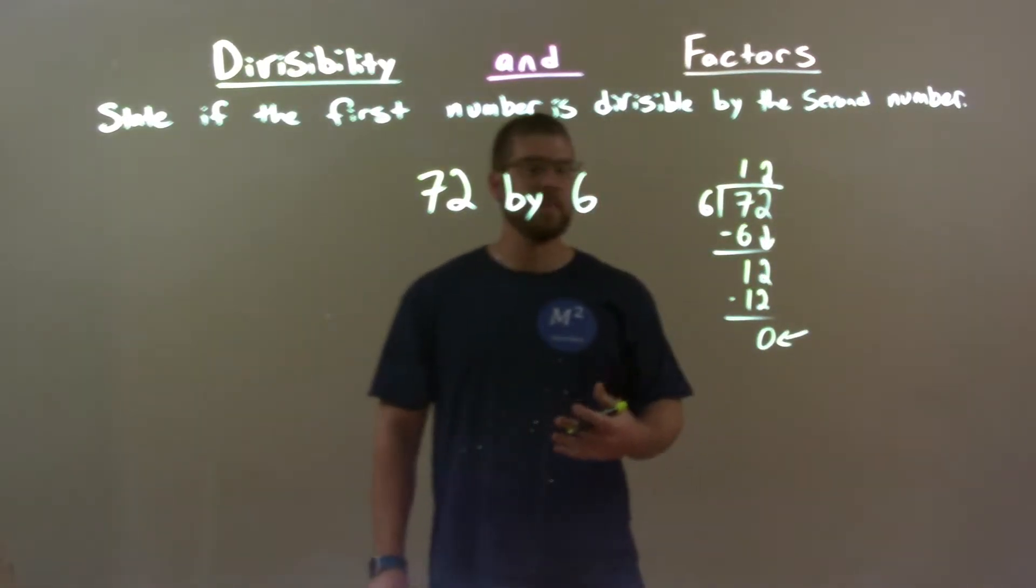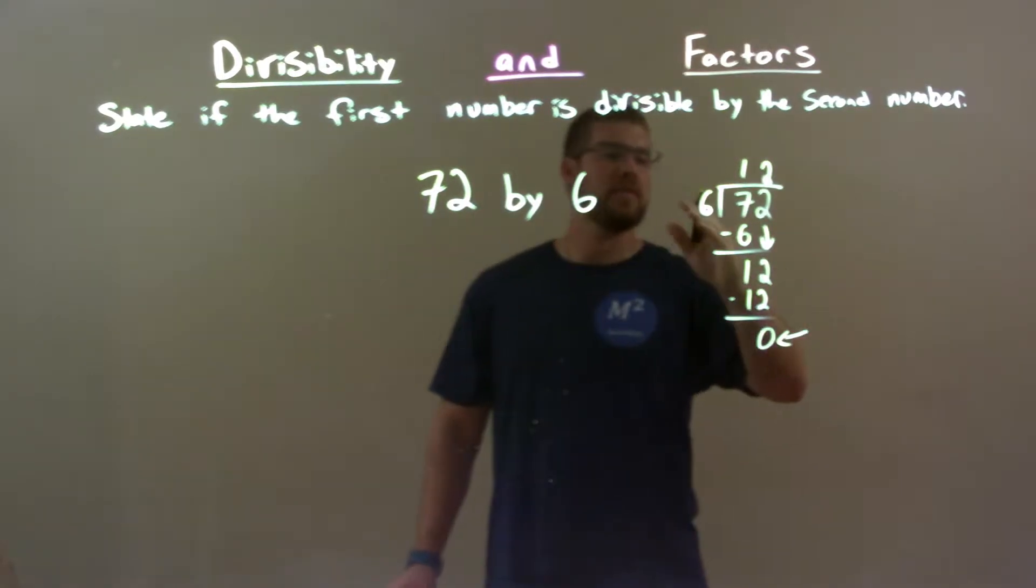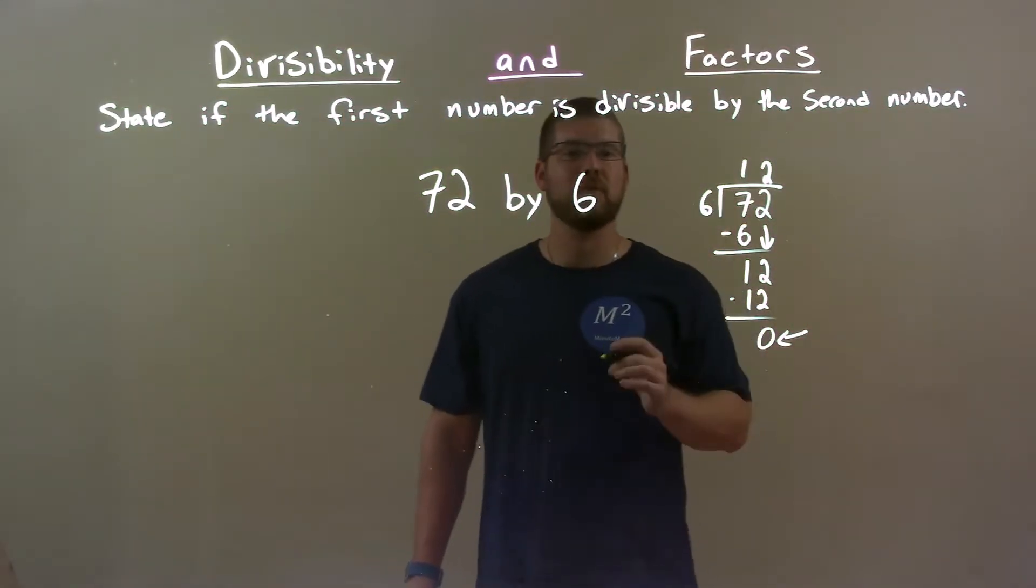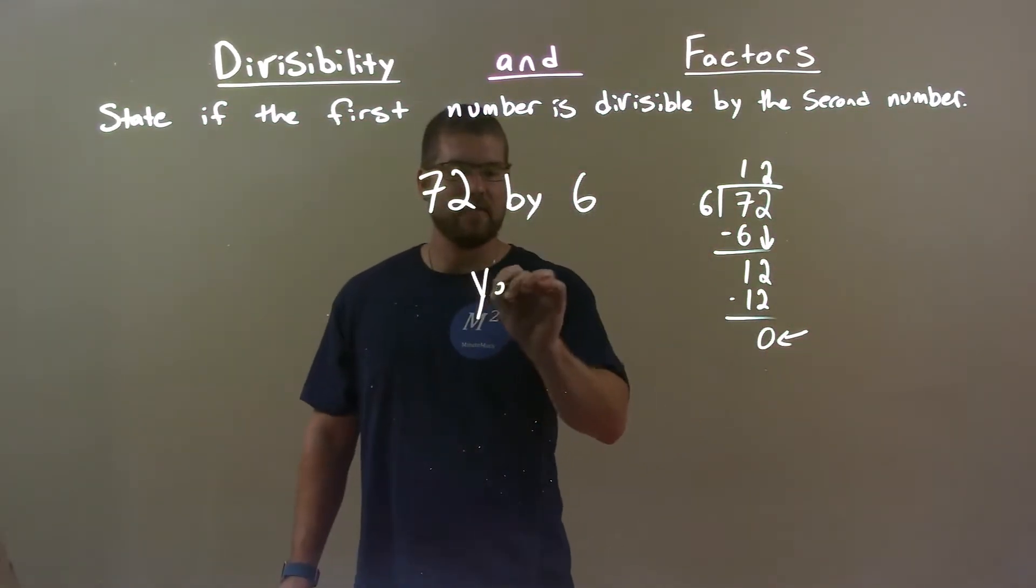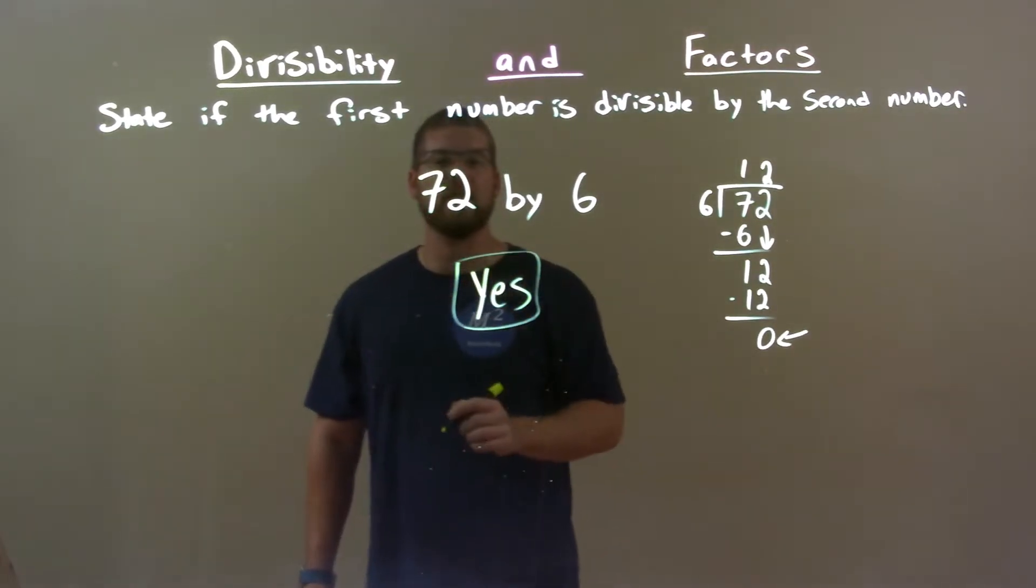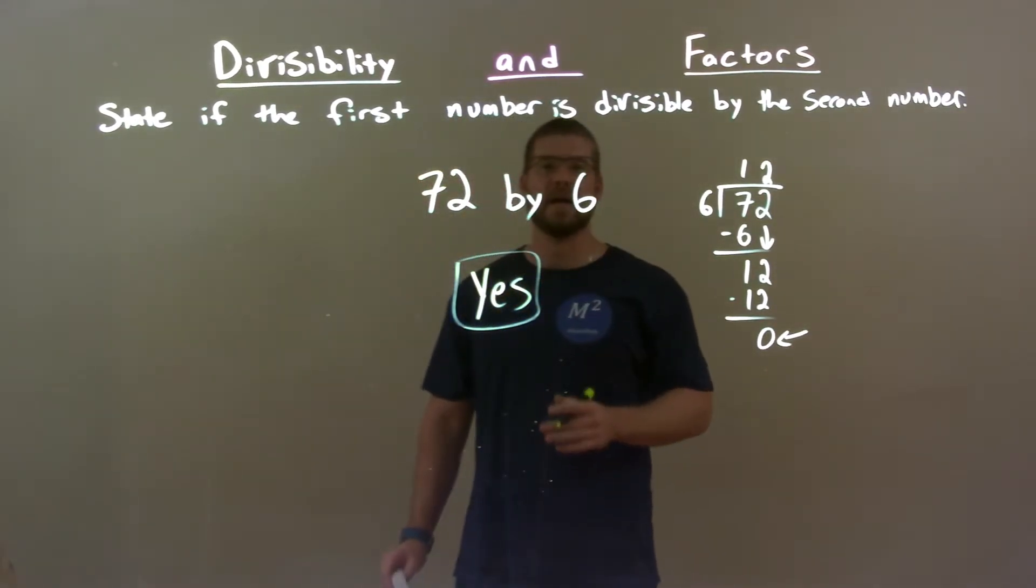and we get a 0. Since we end with 0, it goes in evenly, right? So, 6 goes into 72 12 times. It goes in evenly. So, yes is our final answer. 72 is divisible by 6.